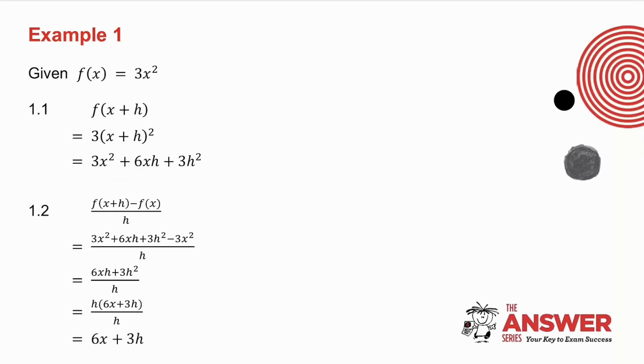In 1.2, I ask you for f(x+h) minus f(x) all over h. Now, I've got f(x+h) over here. So there's my f(x+h). I want to minus f(x), which is there, all over h. What I then do is I collect together like terms on the top, I factorize the top, and the h's cancel and I get 6x plus 3h.